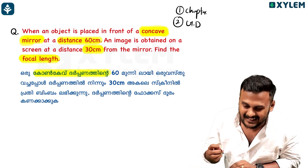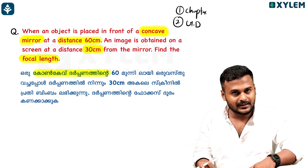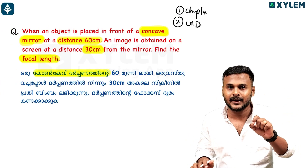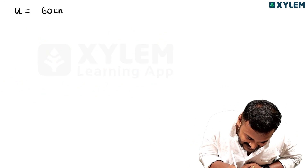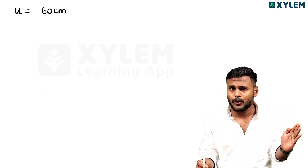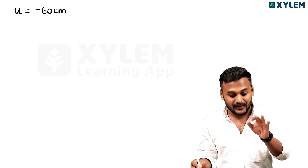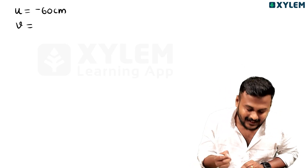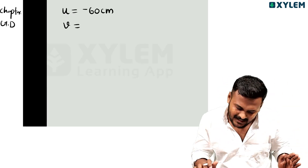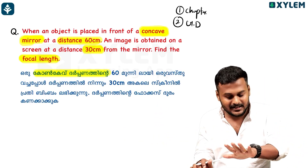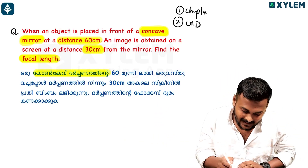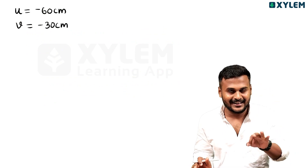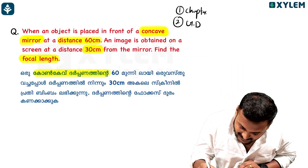The second step is Given Data — chapter identify is done. The object distance U: whatever is the object, that is the object. V is the image distance. The image is on the left side — real image — so V is minus 30 cm. These two things are given. The third step is to find what we need: we need to find the focal length F.